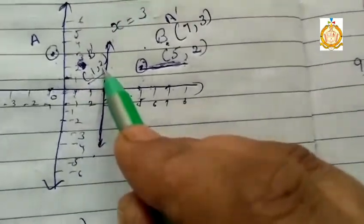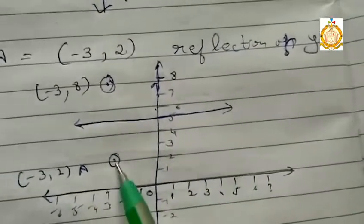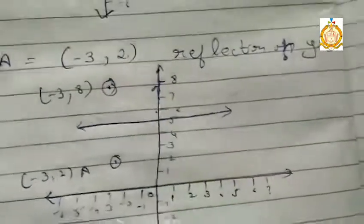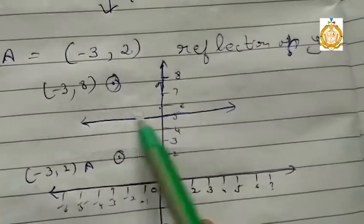In the same way, if we have to reflect on the y-axis. Now y line is given 5. I draw a straight line from 5. Now the given point is (-3, 2). -3 and y value is 2.